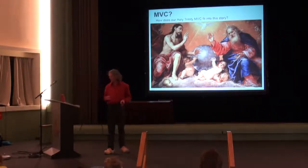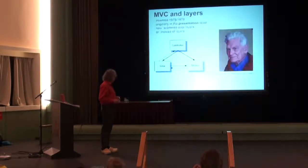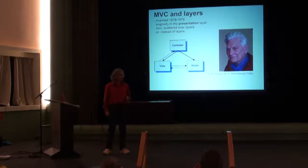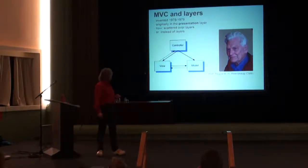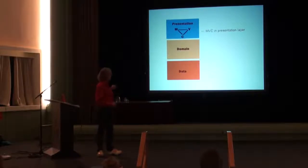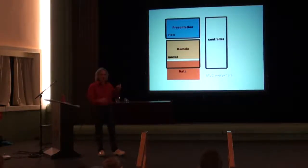Now I talked about the layers, but how does the Holy Trinity of MVC fit into that? MVC was invented by Trygve Reenskaug — again, someone from Norway. Always clever people from Norway, I think, because they keep it cool up there. It was already in 1978–79 at the Xerox lab that he invented MVC. But originally, MVC was in the presentation layer. In those days the domain layer was still called the 'business logic layer.' But MVC is originally something totally within the presentation layer. If you look now at Joomla and all the MVC frameworks, it's even hard to see where the layers are.